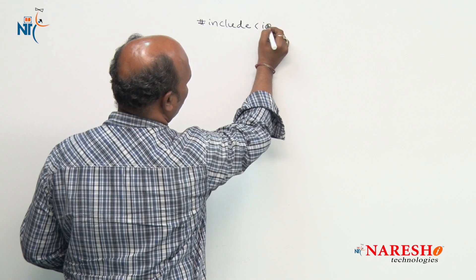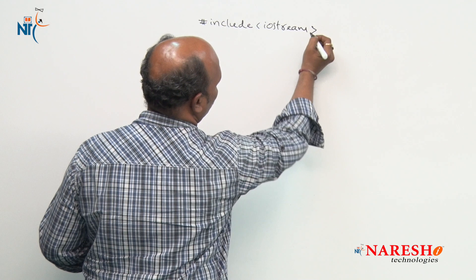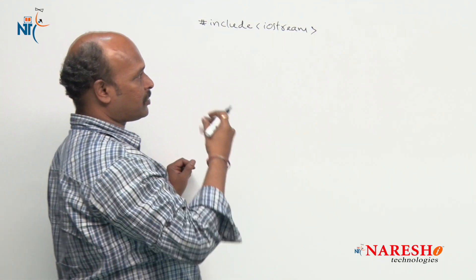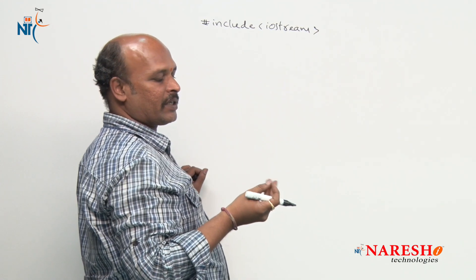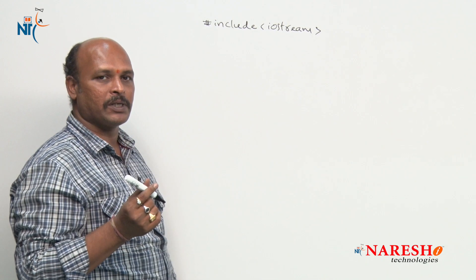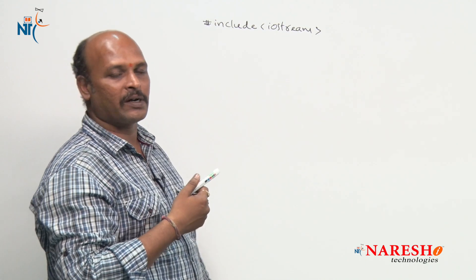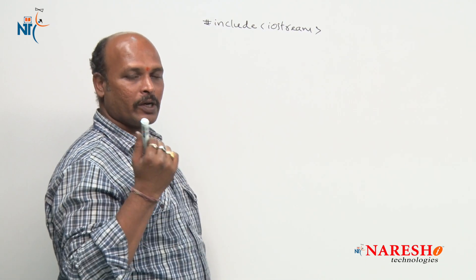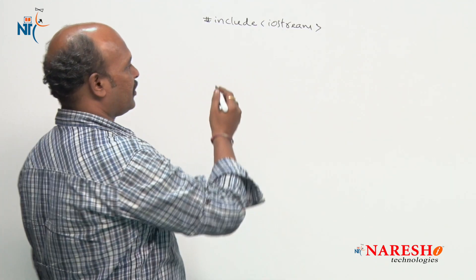Now I am going to show you how to create the nested try blocks. Watch it, I am going to show you one example on nested try blocks. For iostream, do not enter the dot h because we are conducting the example in Dev C++. In Dev C++, for C++ header files, do not enter the dot h.